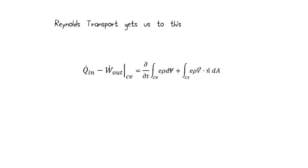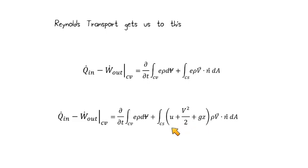So that gives us an equation that looks like this. The rate at which work and heat enter and leave the control volume is equal to the rate of change of energy within that control volume, plus the rate at which energy enters and leaves with the mass. And we could expand this term if we wanted to represent those three parts of the energy that we talked about.